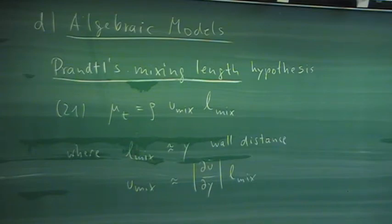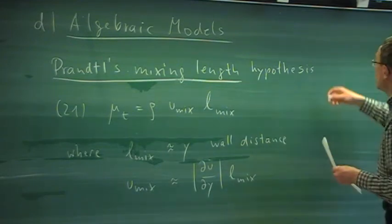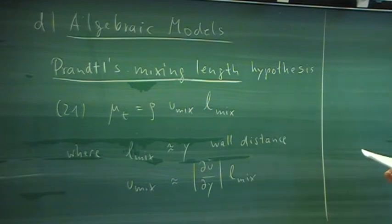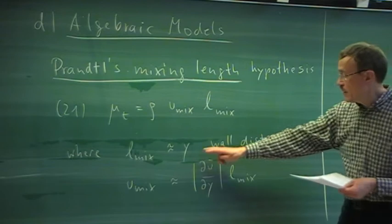The mixing velocity is, in a way, an approximation of the fluctuation. Outside the boundary layer, some closure models are used. In the end, we can compute the eddy viscosity for the whole region — not only near the wall but also away from the wall — as a function of the wall distance, density, viscosity, mean flow, and derivatives of the mean flow.